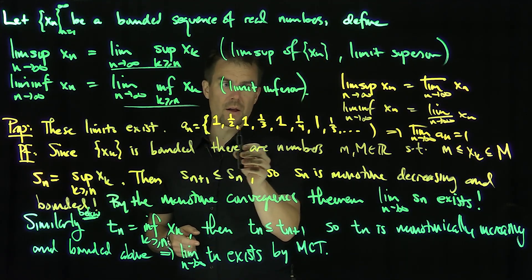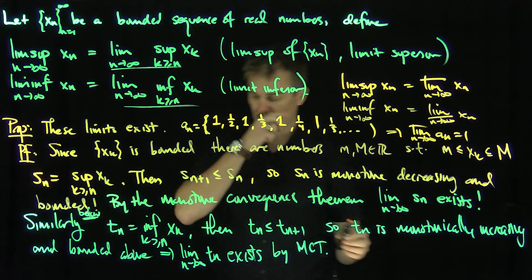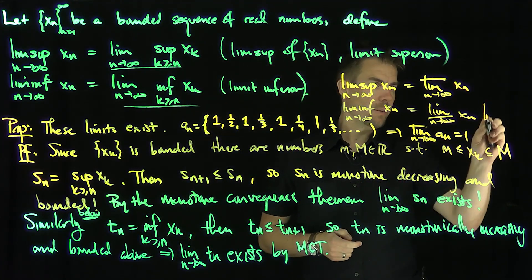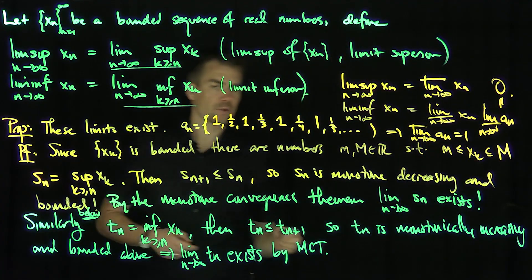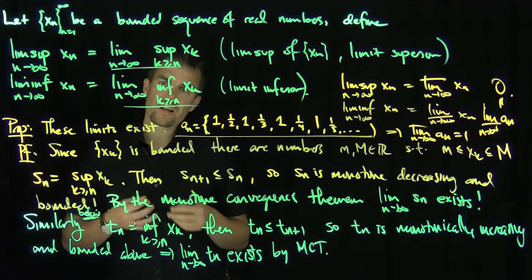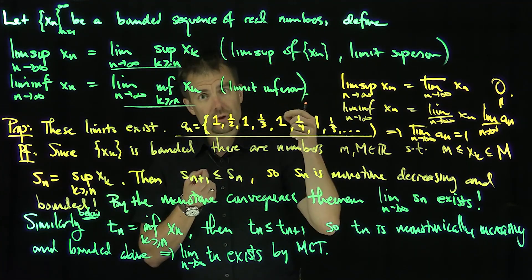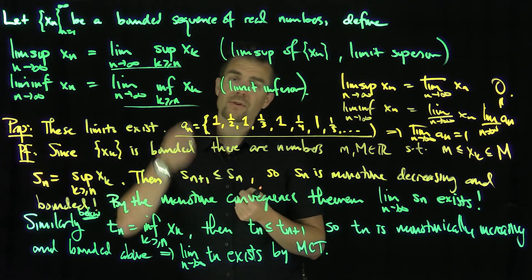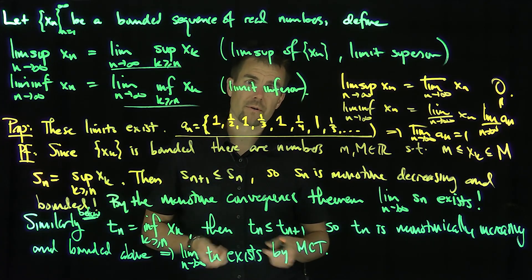Analogously, the lim-inf: the smallest terms are getting closer and closer to zero, so the lim-inf of an as n goes to infinity is equal to 0. The intuition is that the lim-sup is the largest limit point — the largest value any subsequence can converge to — and the lim-inf is the smallest limit point of the sequence. We'll explore this further in upcoming videos.